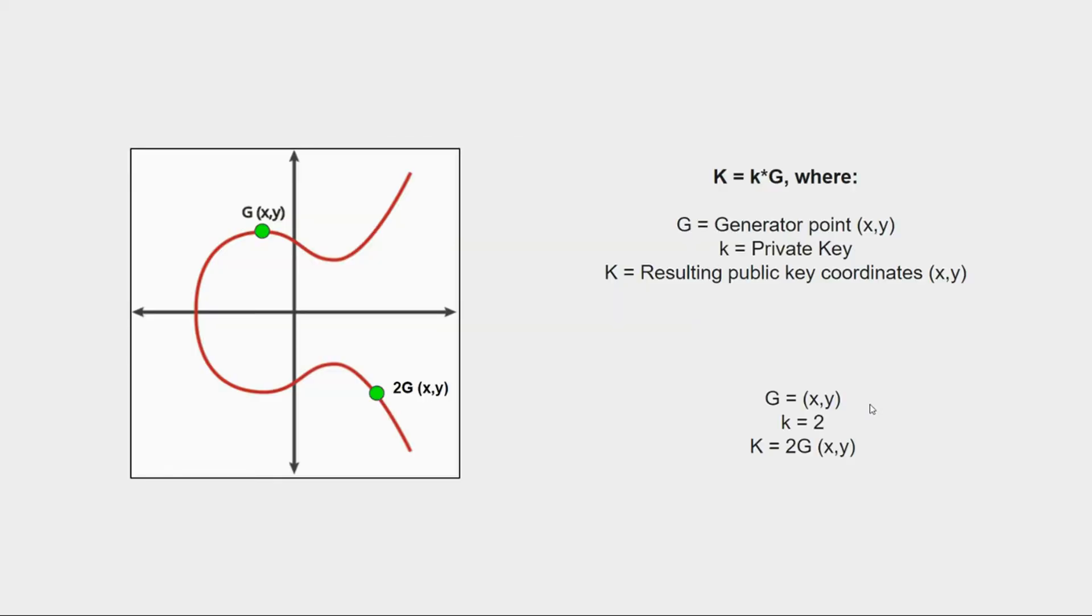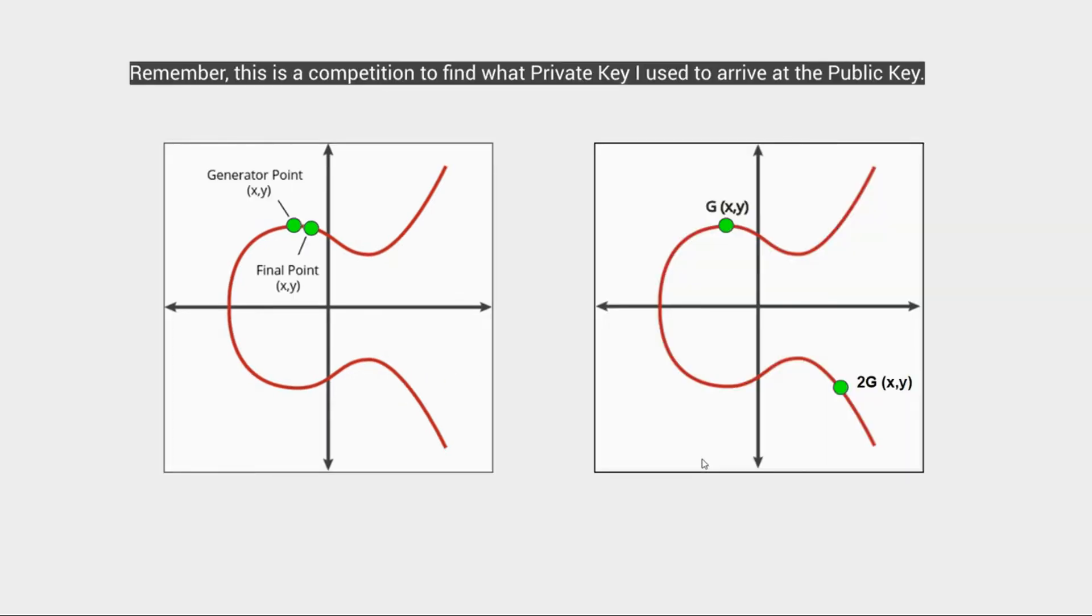Now, if we apply this to our trapdoor function, we have g as an x and y coordinate. We have the private key of 2 because we multiplied the generator point by 2 to arrive at our final public key point of 2g. Right? Makes sense. Now again, this is a competition. You are trying to find what is the private key that arrives at this final point, at this final public key.